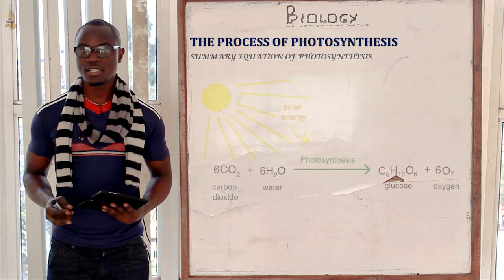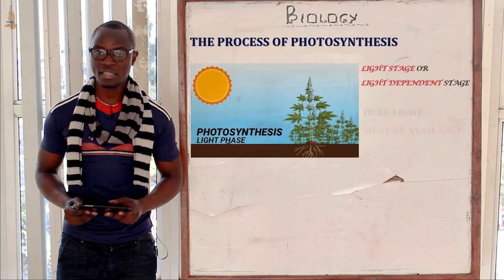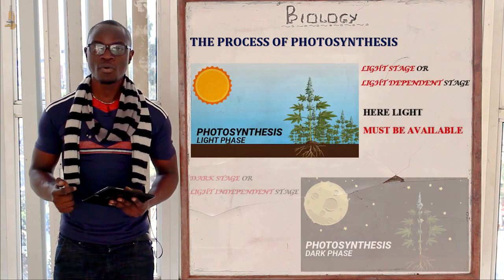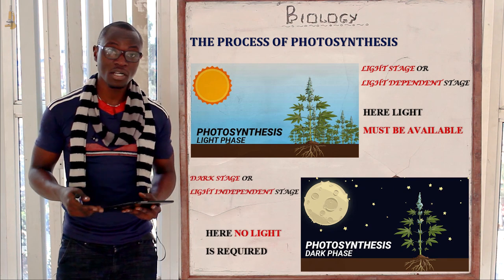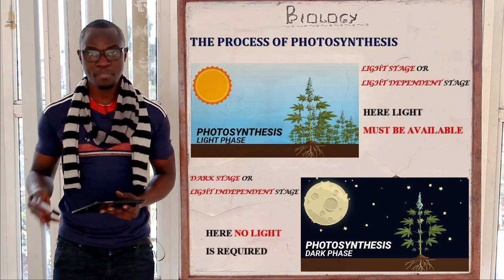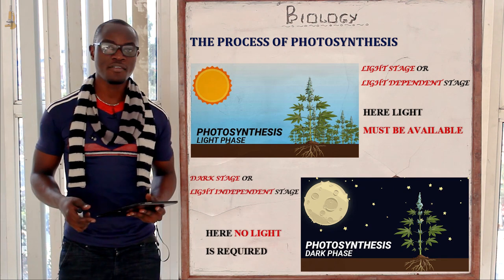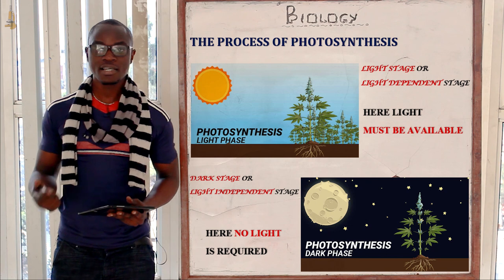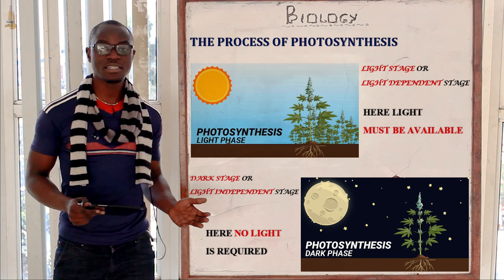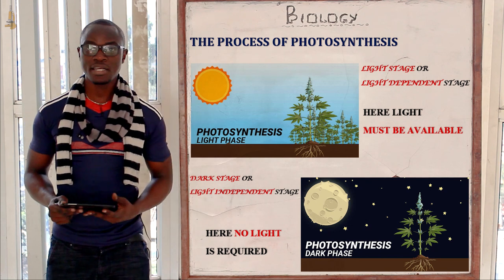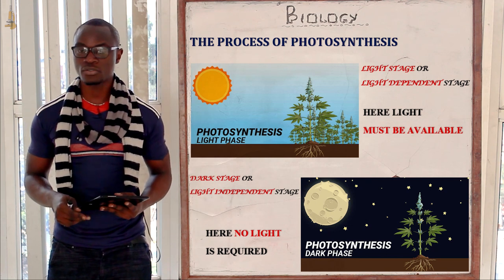Photosynthesis proceeds in two stages. The first stage is the light stage, which may also be called the light-dependent stage. The other stage is the dark stage, which may be called the light-independent stage — it does not need light.